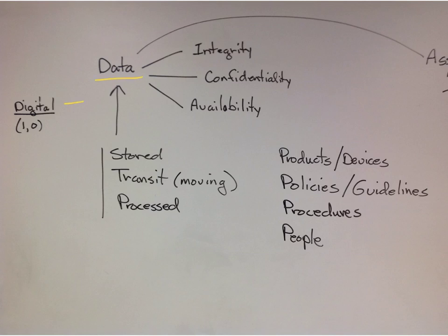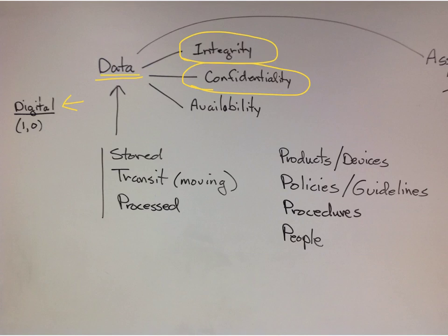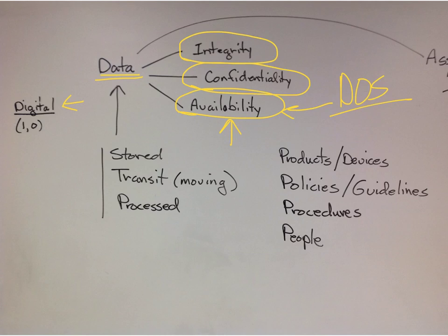We're thinking about data in a digital form. Data integrity represents whether the data is accurate. Data confidentiality is about who can see the data — is it confidential, only the people that need to see it? And availability — this one's a little harder to understand — we need to make data available for people to be able to do their jobs. Like a denial of service attack, where somebody denies your opportunity to use technology to get to the data you need to do your job.